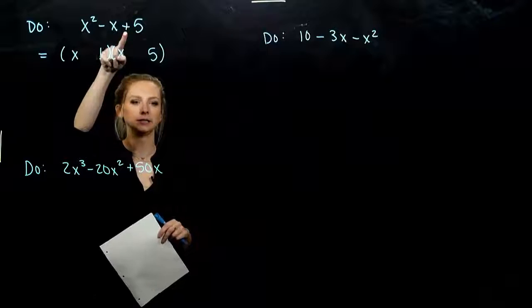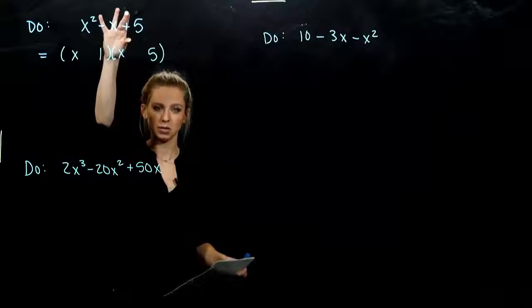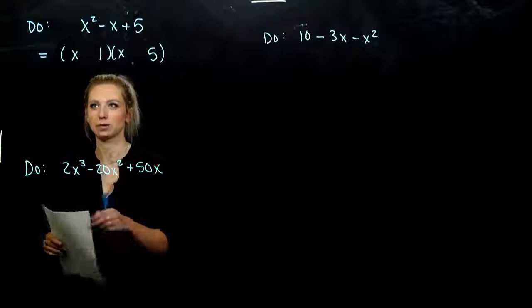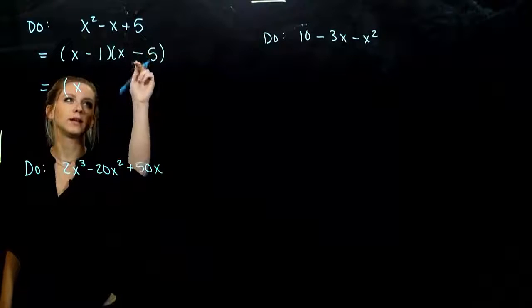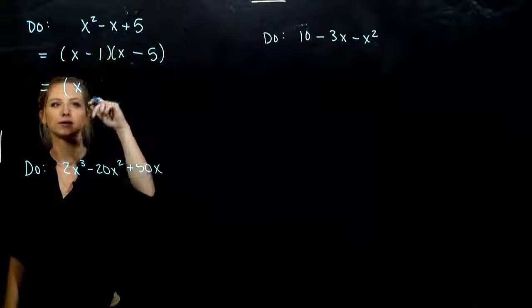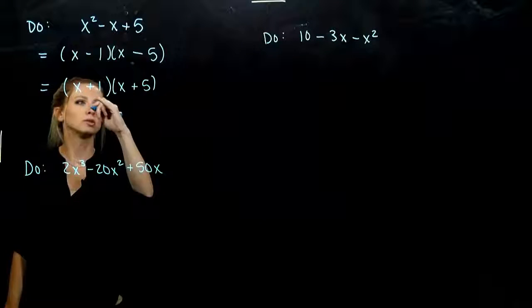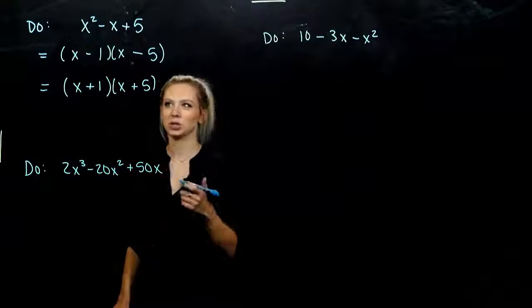So when we're multiplying to get a positive, what has to happen? Signs are the same, either they're both positive or they're both negative. Those are our two options, and we'll see if either one of them works. If they're both negative, when I multiply I get my positive. Or if they're both positive, we'll multiply and get positive 5. Let's check and see if we get the middle term that we want.